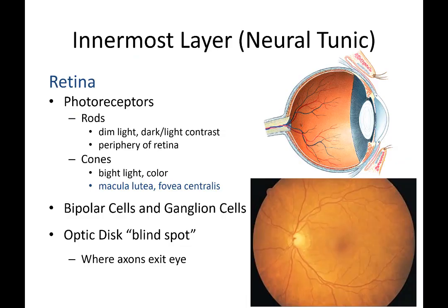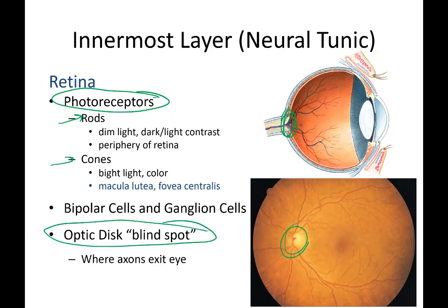The innermost layer of the eye is the neural tunic, which is essentially the retina. The retina contains photoreceptors — rods and cones. The axons of these photoreceptors ultimately leave the eye through an area known as the blind spot or optic disc. These axons, connected to bipolar and ganglion cells, exit via the optic disc and then form the optic nerve leading to the brain.